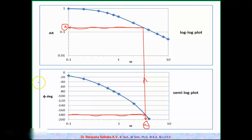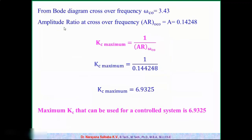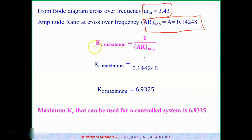At the crossover frequency, draw a vertical line up to the AR (magnitude) curve. From that point, draw a horizontal line to the AR axis to read the corresponding amplitude ratio value, called 'a'. From our Bode diagram, the crossover frequency is 3.43 rad/s and the amplitude ratio at the crossover frequency is AR = 0.14248.